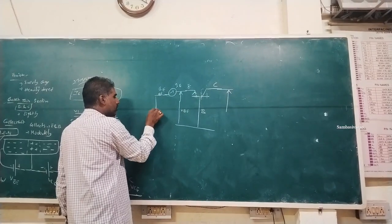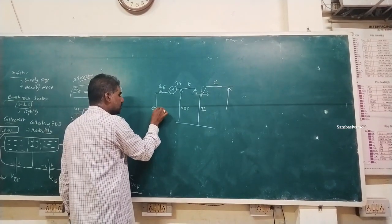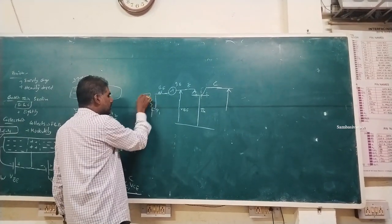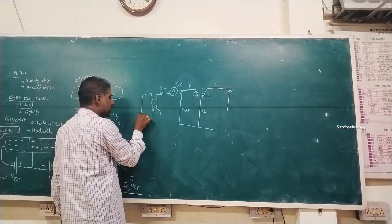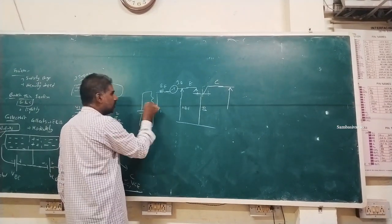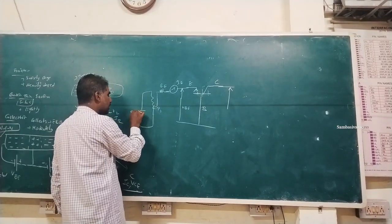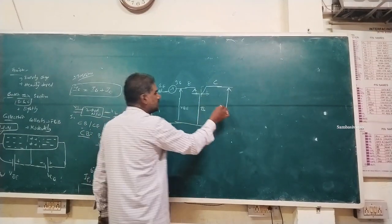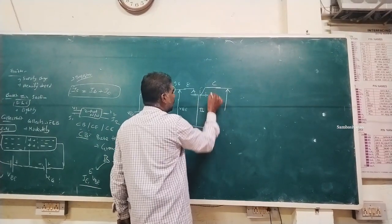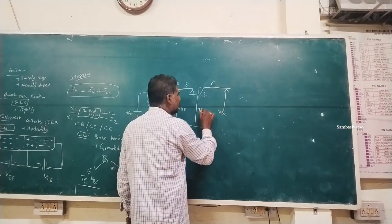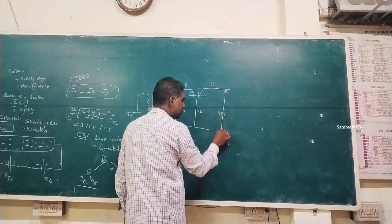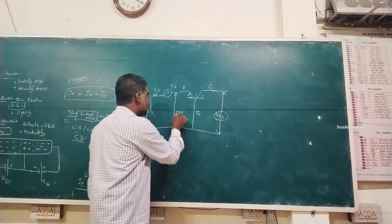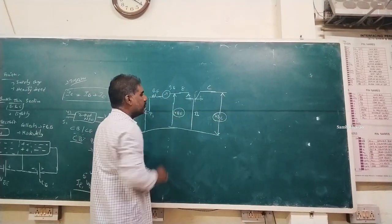A potentiometer is used to adjust the voltage. A supply VEE (emitter power supply) is applied. The base-emitter voltage VBE and base-collector voltage VBC are referenced.